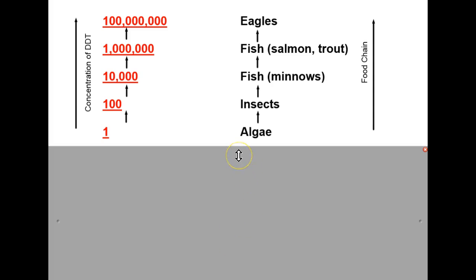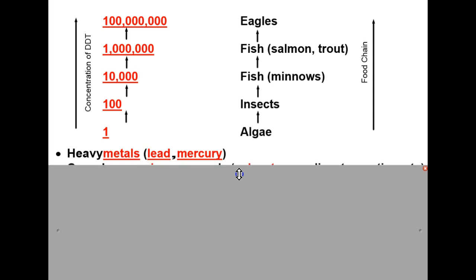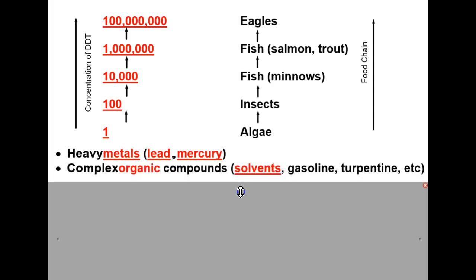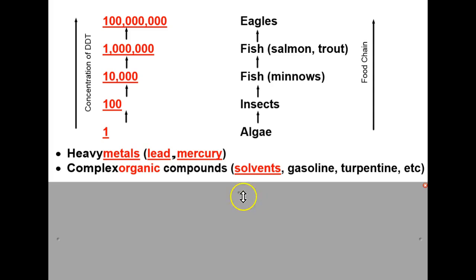Another non-biodegradable toxin category includes heavy metals such as lead and mercury. These are complex organic compounds used for solvents, gasoline, turpentine, etc., and they cause huge havoc in our bodies of water. Lake Onondaga near Syracuse is an excellent example of the problems caused by industrial solvents being dumped into the lake.